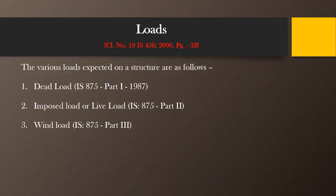The third very important load is wind load. It is a lateral type of load which is going to act on structures whenever the wind intensity increases, and it will be a very predominant type of load particularly in case of high-rise structures. For getting detailed information about wind loads it is recommended to use IS 875 part 3.